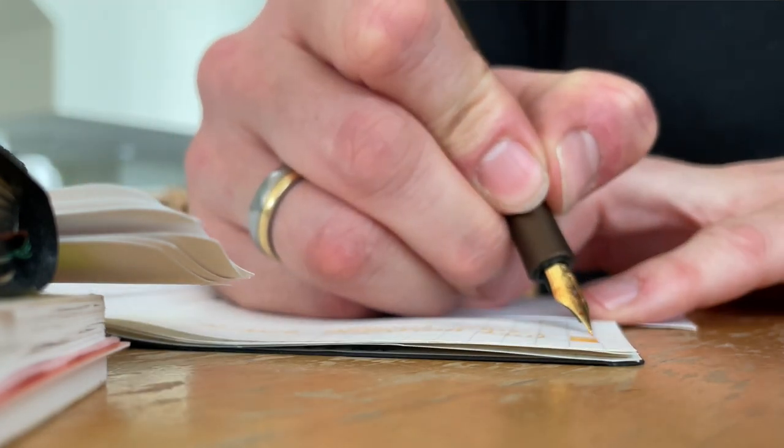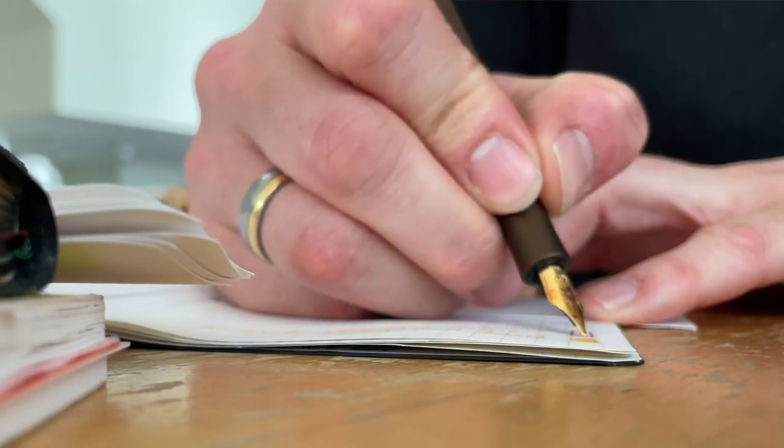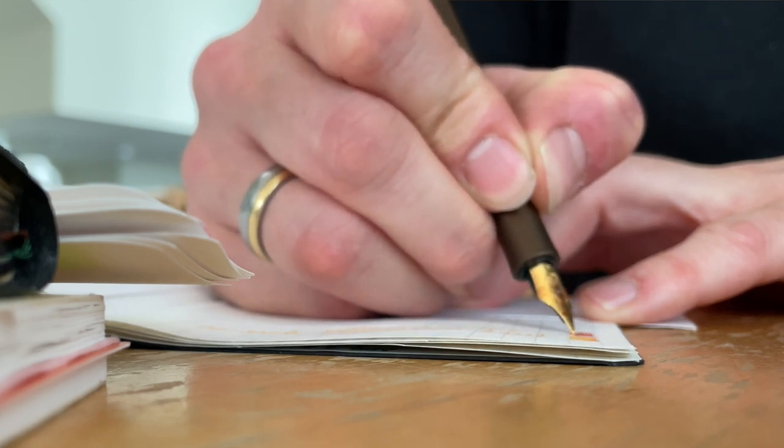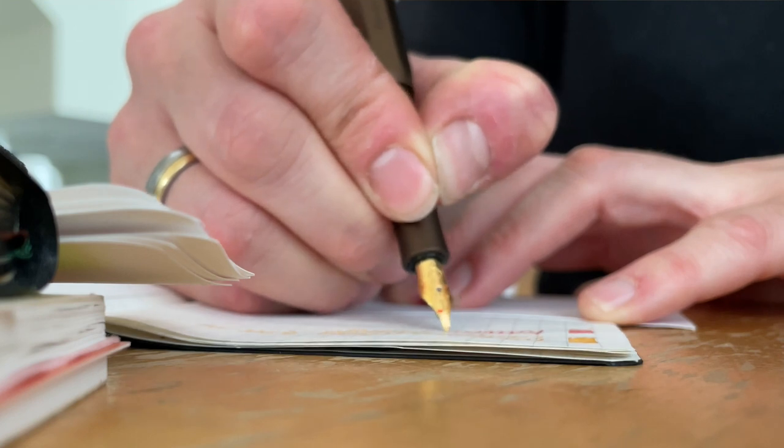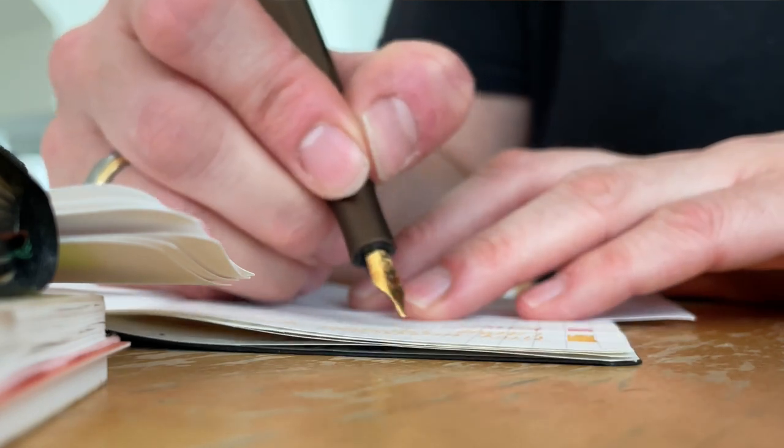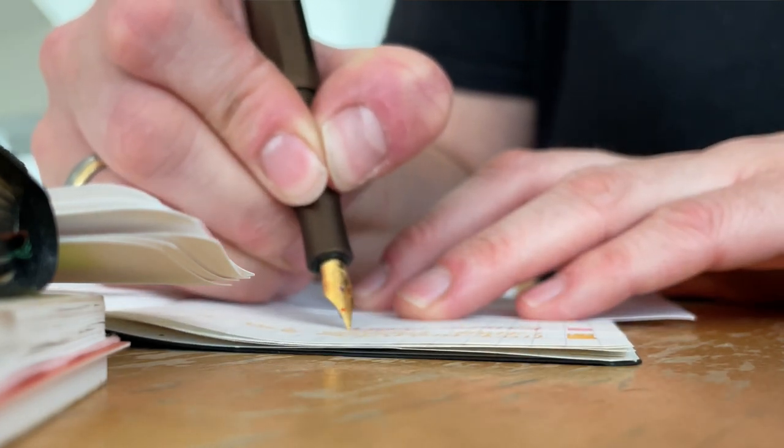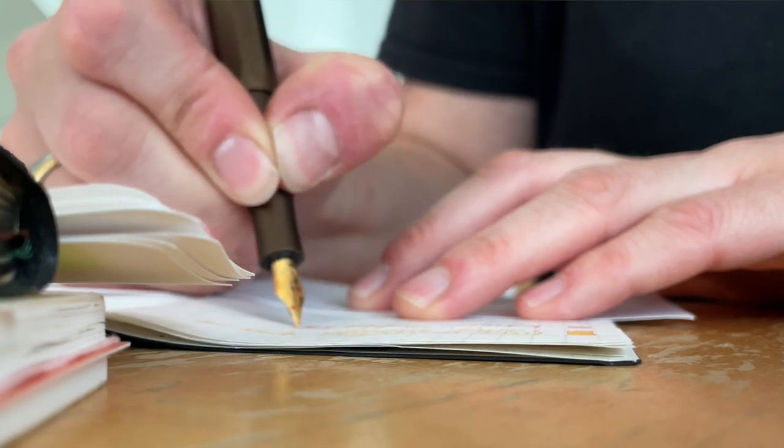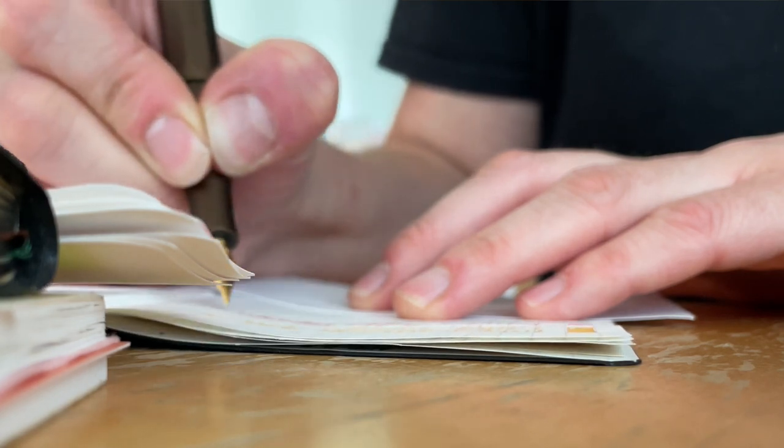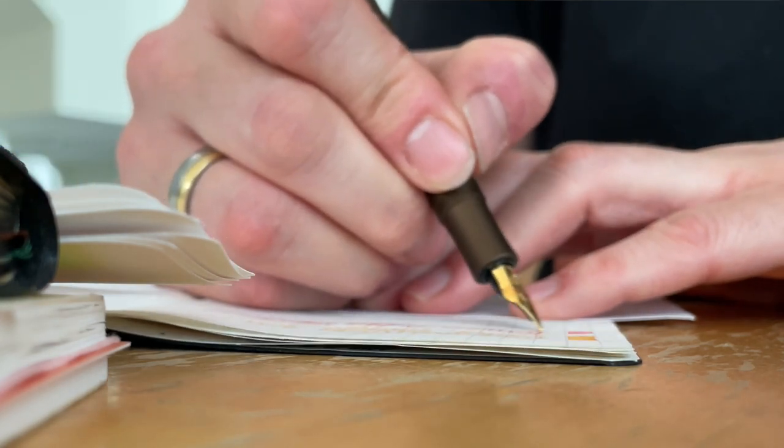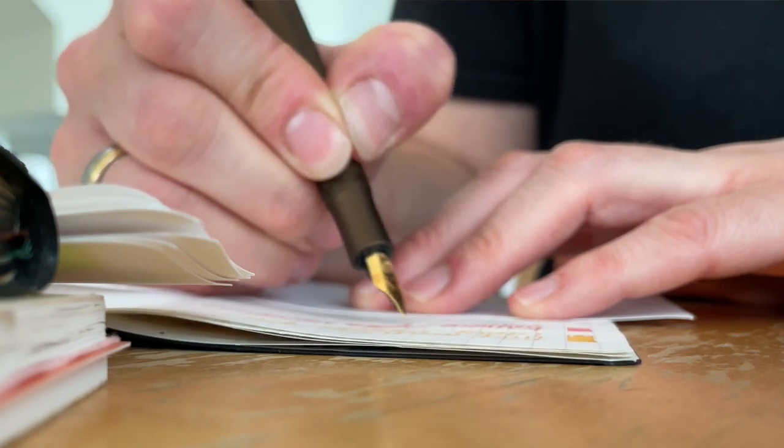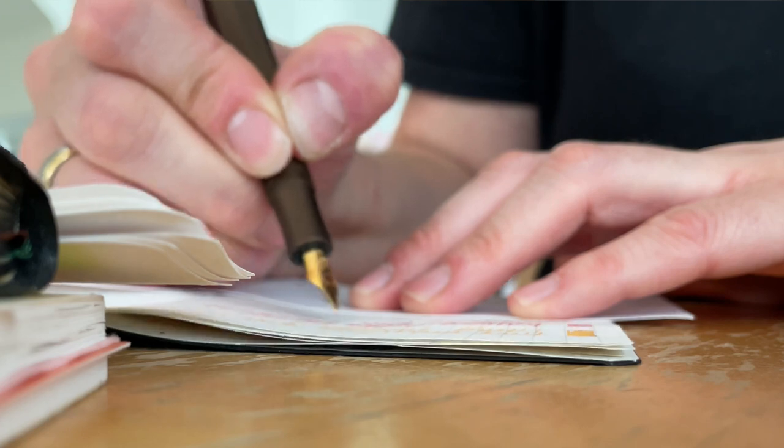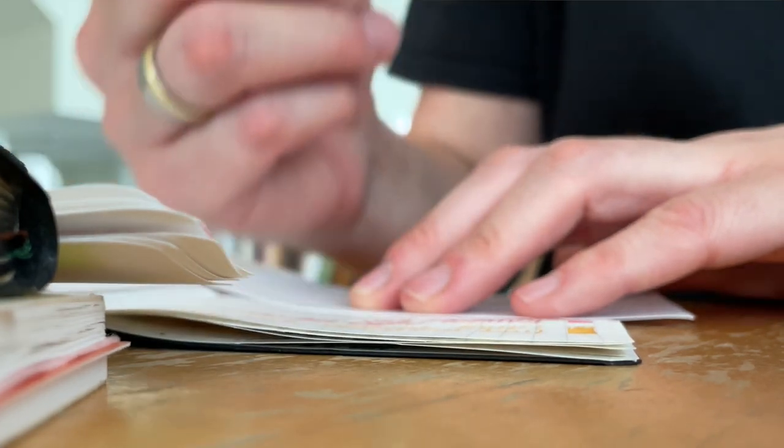This is the Kaweco, as I said, Kaweco AL Sport Golden Espresso. This is an M nib and this is of all the M nibs that I have on my Kawecos. This is the smoothest of those. This is Diamine Pink Ice.